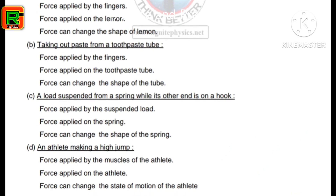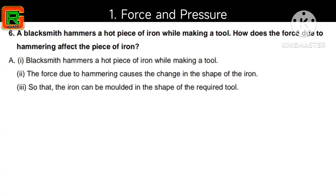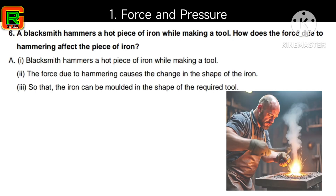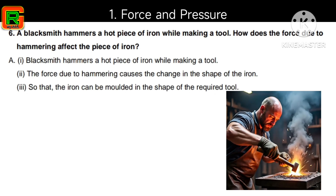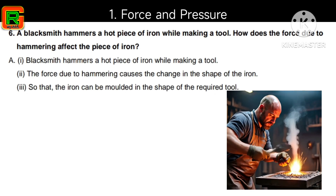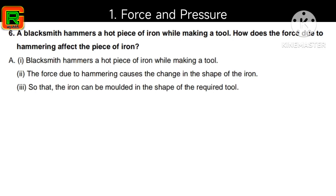Sixth question: a blacksmith hammers a hard piece of iron while making a tool — how does the force due to hammering affect the piece of iron? The force due to hammering causes a change in the shape of the iron, so that it can be molded into the shape of the required tool.